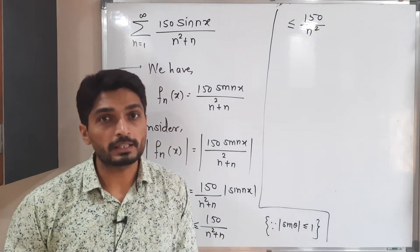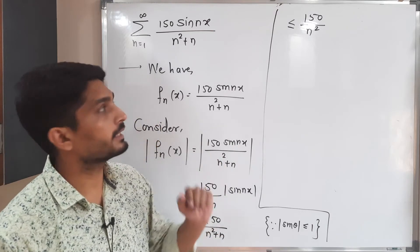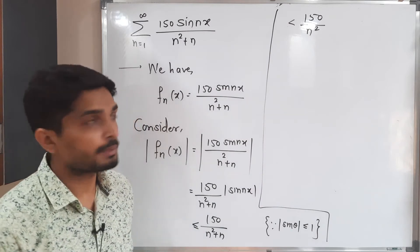Since you know if you reduce the denominator, value will get increased. So if you remove this n, value will get increased. We will have a strictly less than here. So this is a very important thing we have got.